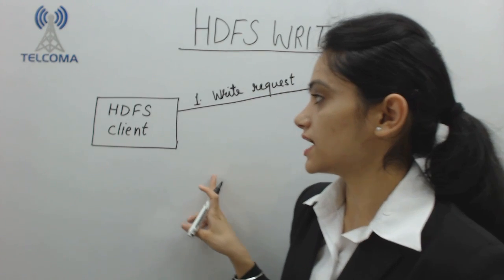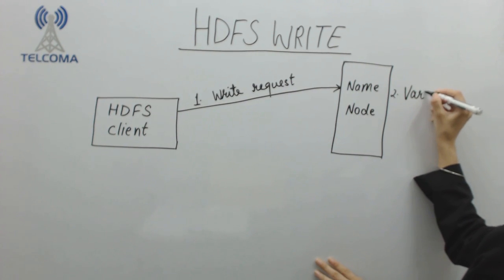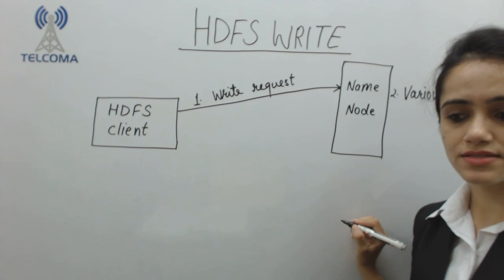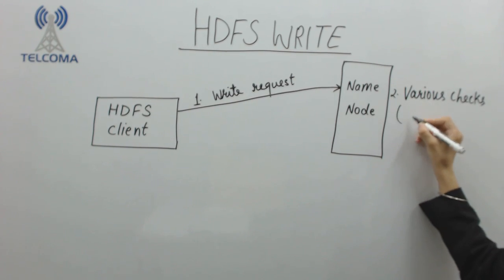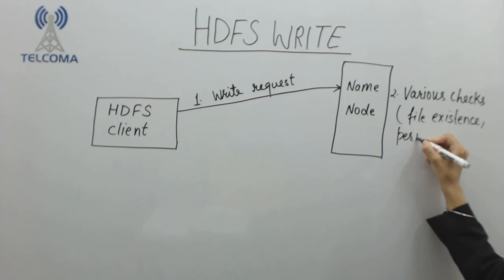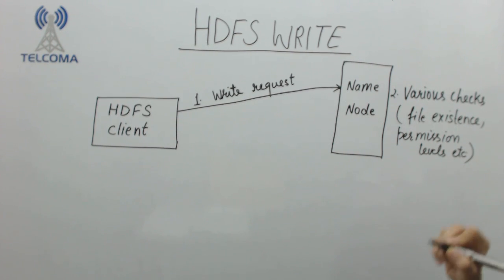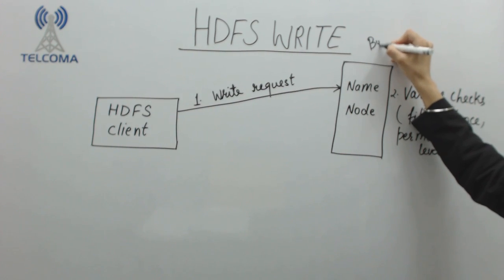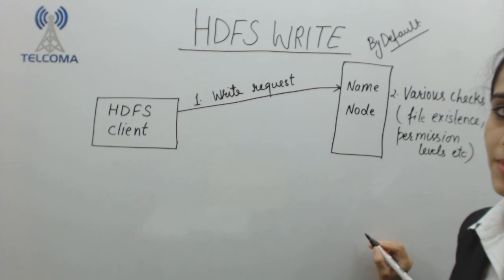The name node has to perform various checks. These checks include whether the file already exists and permission levels, etc. The name node will verify all of these. As we know, by default the DFS replication factor should be three.